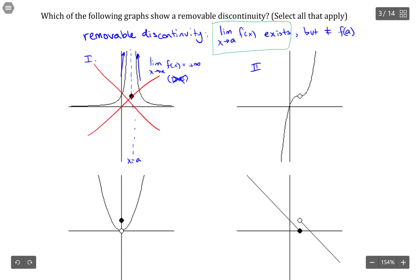Alright, 2. Here we have a discontinuity, which is a hole. Coming from the left-hand side and the right-hand side, we're approaching the same value. So that is a discontinuity. But because the limit exists, this is a removable discontinuity. So that one is removable.